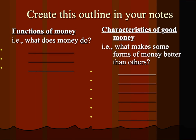This lesson we're going to talk about money. Pause the video here and copy this down into your notes. There are going to be three functions of money — what does money do — and then six characteristics of good money, or what makes some forms of money better than others.